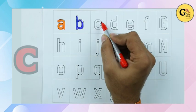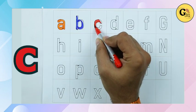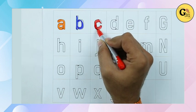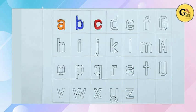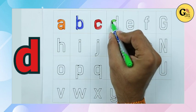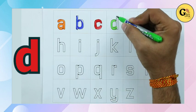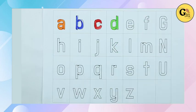C for cat. It's small c. C for cat. D. D for dog. Like it's a d. D for dog.